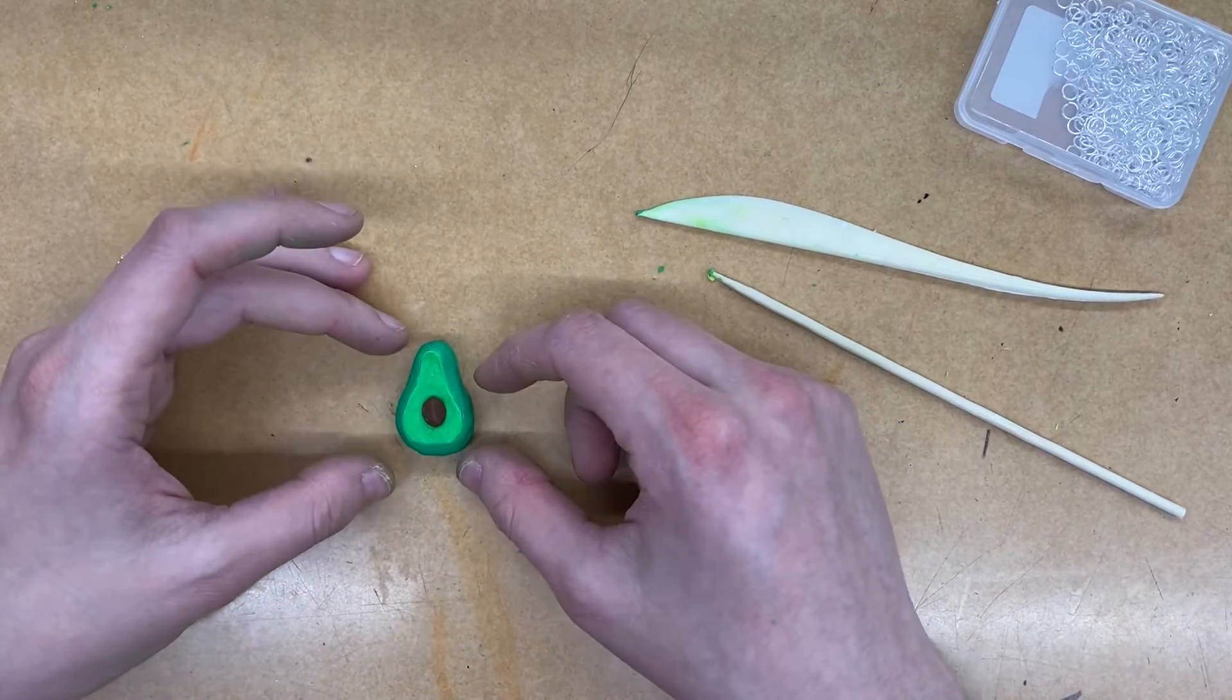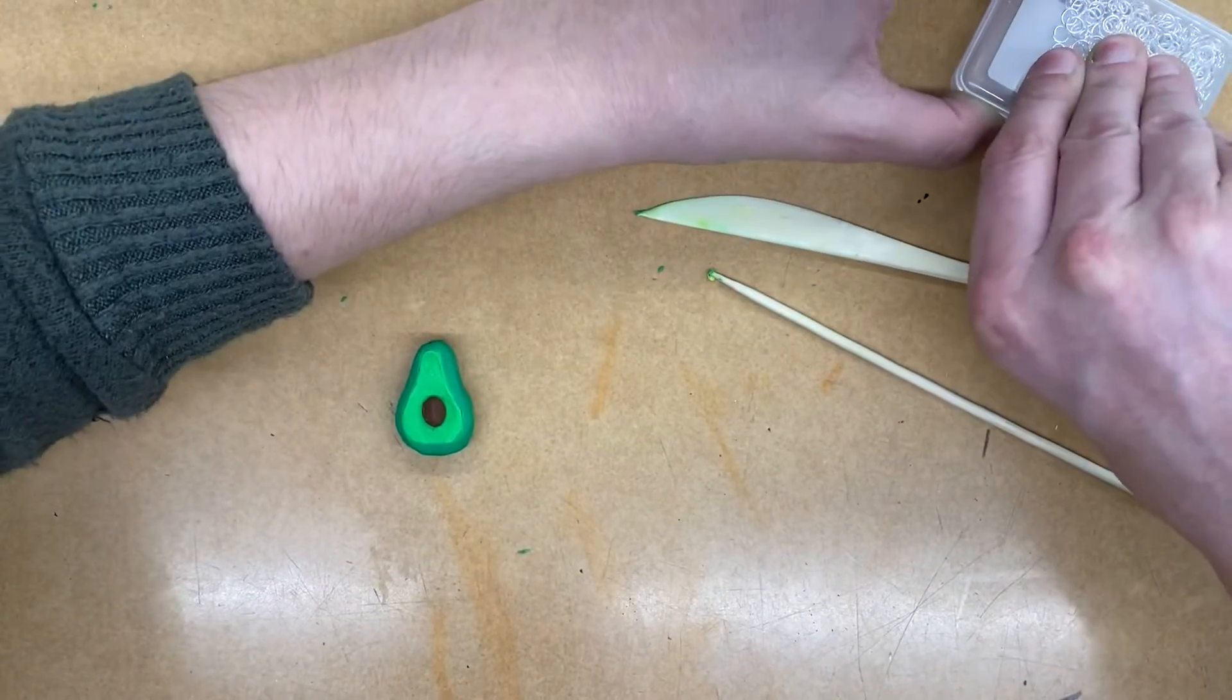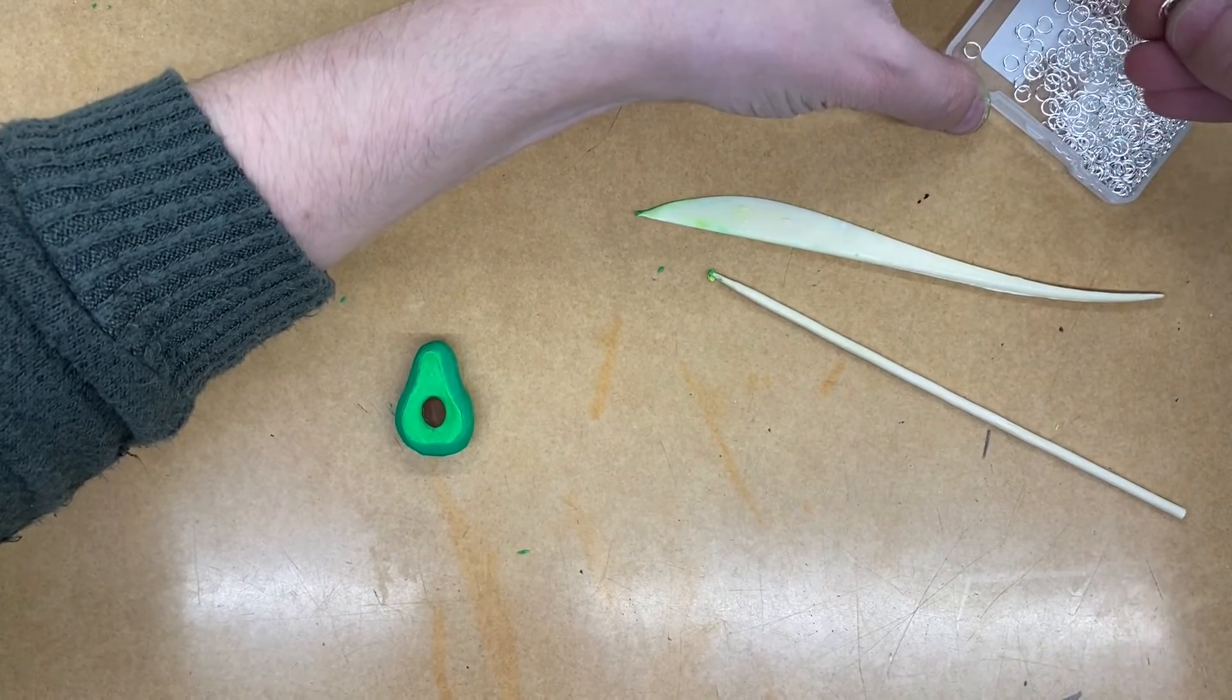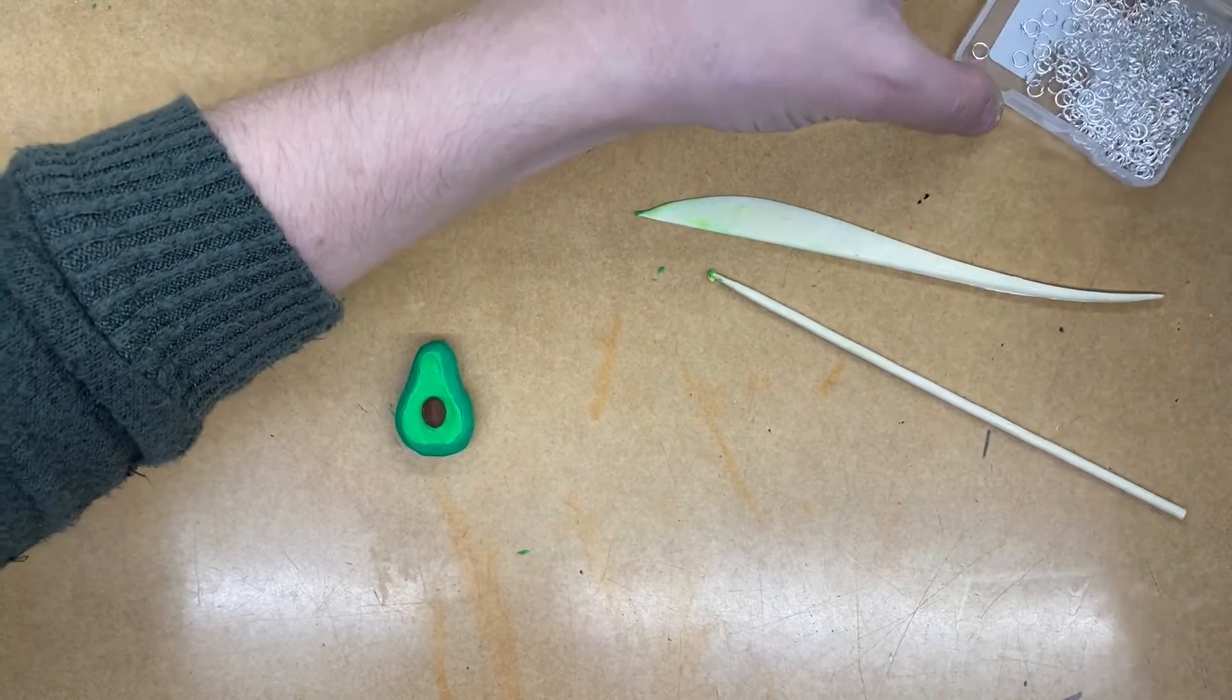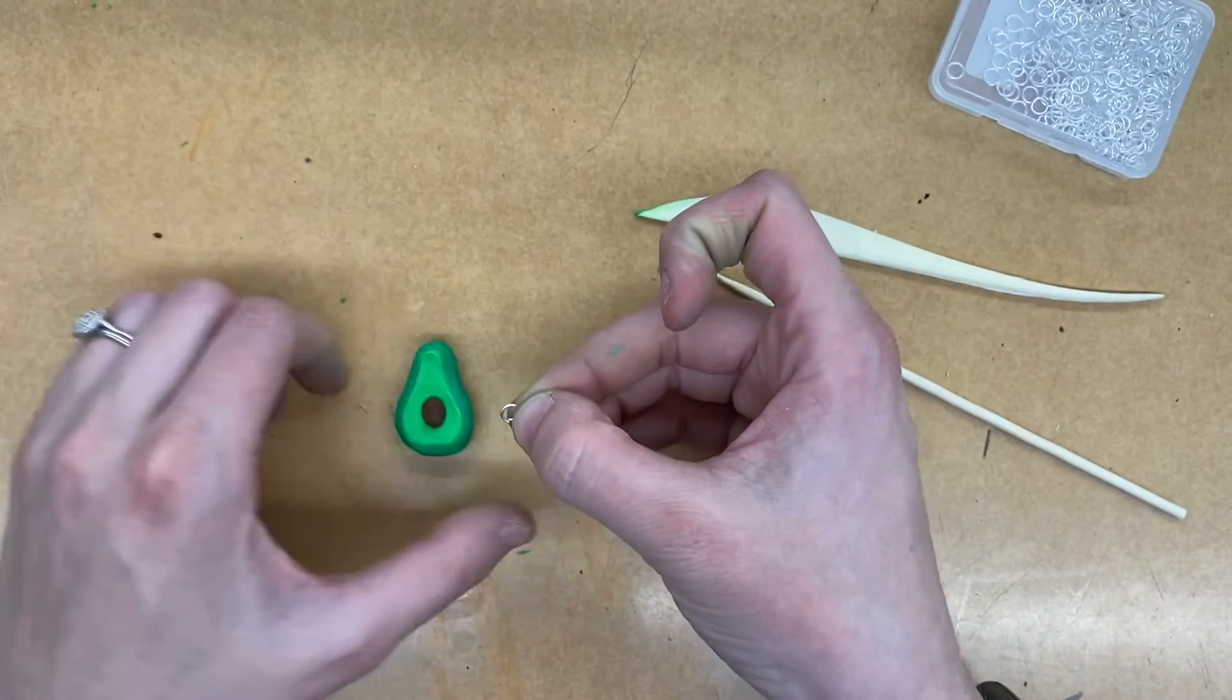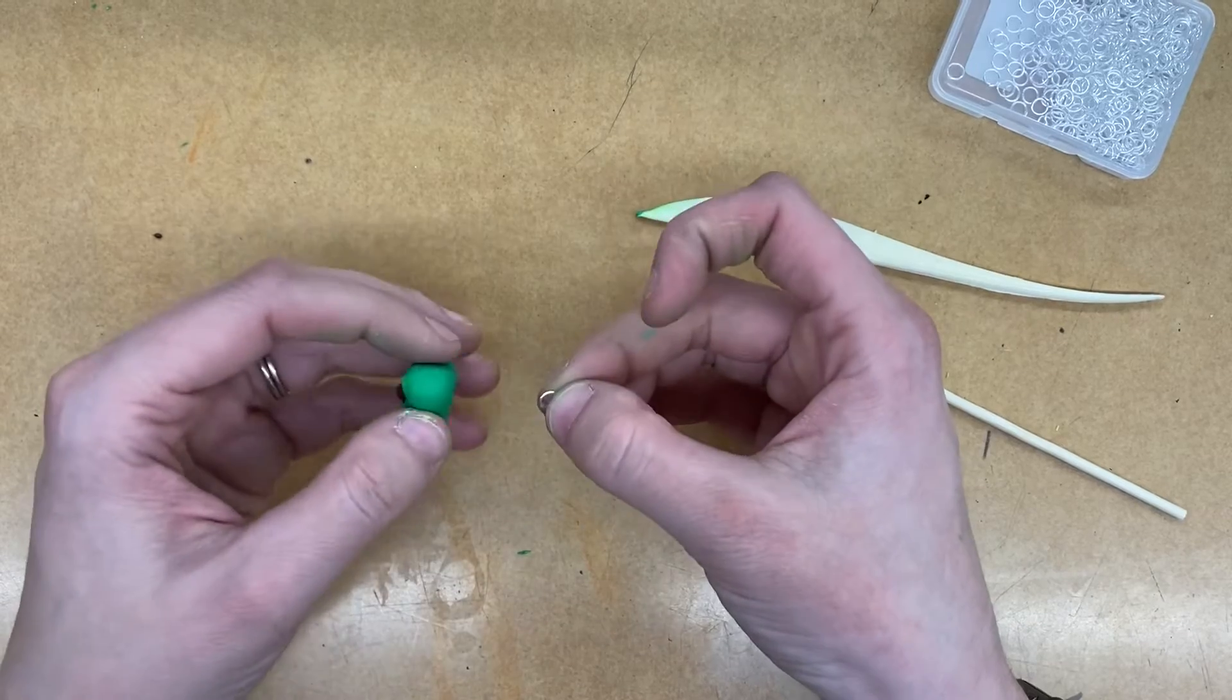And then, in order to actually create the keychain, what you want to do, and yes, these are small, and I will pass these out to you when you need them, this is a jump ring, and this is what's going to be able to actually get us to attach the keychain to it.